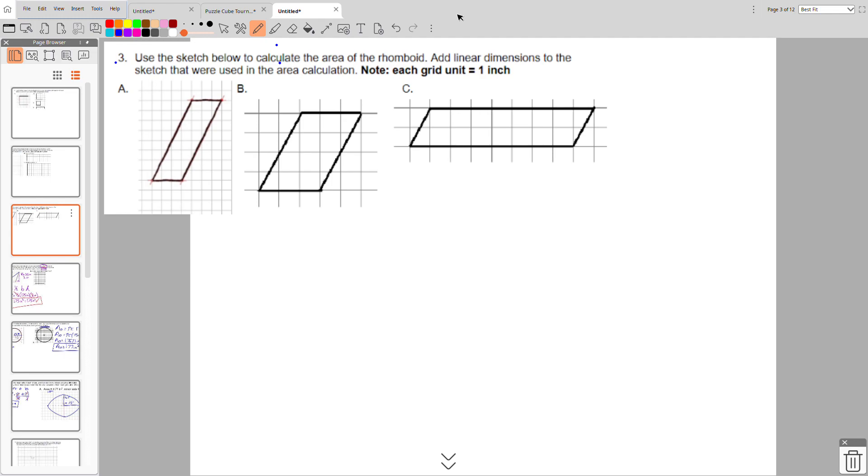So I'm going to do B, and according to our formula sheet in the back, I know that the area of my rhombus is equal to base times height. And this is not the sideline, this is the height.